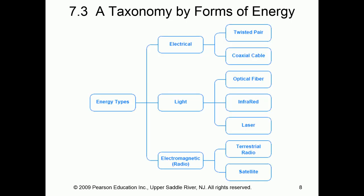Here is a very basic breakdown of our types of communications or transmission media, broken down from energy types: electrical, light, and electromagnetic. Underneath electrical: twisted pair and coax — those are our copper-based. Underneath light: fiber optic, infrared, and laser. Lastly, electromagnetic — that's our radio or wireless, classified as either terrestrial radio or satellite, non-terrestrial.